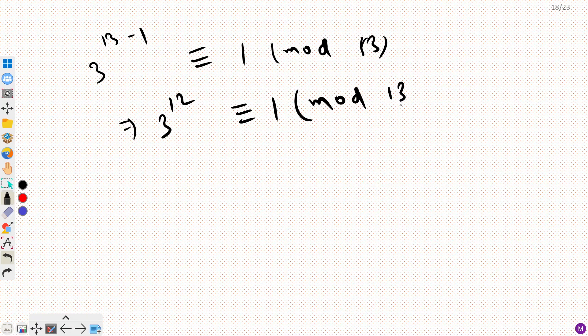Similarly, we can say 5 raised power 13 minus 1, this time I am applying on 5, is congruent to 1 modulo 13. So can I say that 5 raised power 12 is congruent to 1 modulo 13?